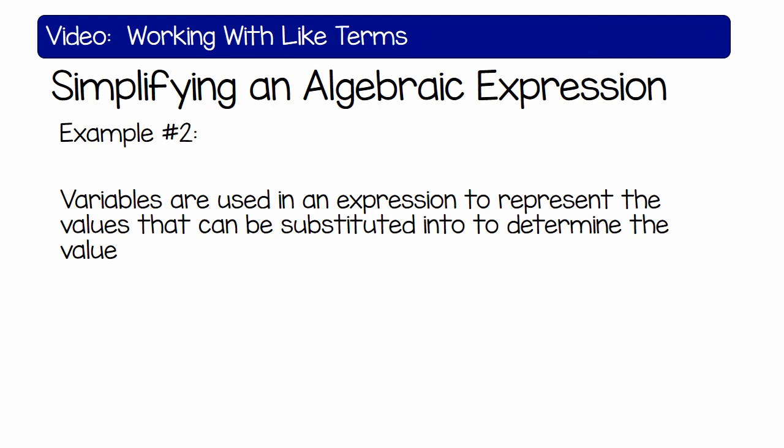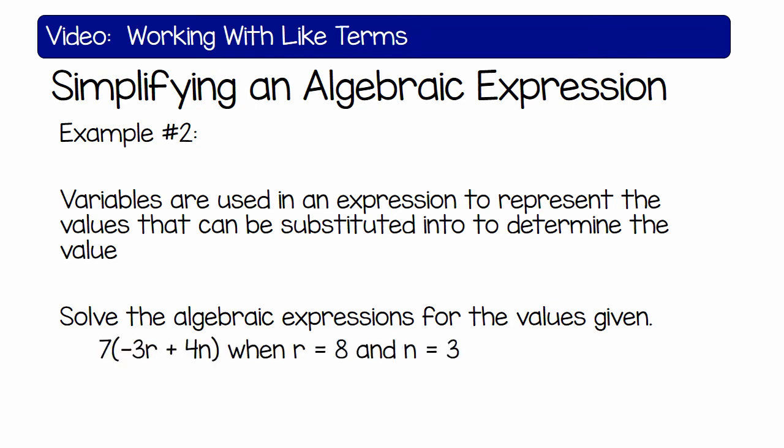Solve the algebraic expressions for the values given: 7 times in bracket 3r plus 4n, when r is 8 and n is equal to 3.